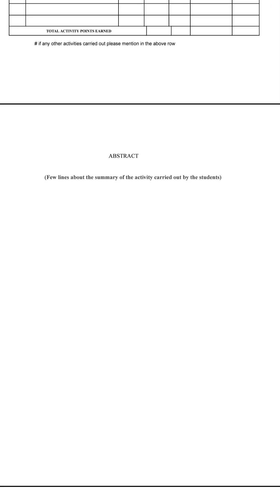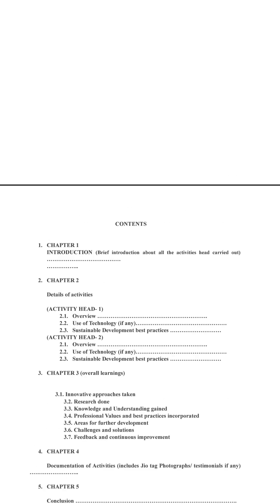You also have to provide an abstract — a summary of the activities you carried out. The content of the report is structured as follows: Chapter 1 gives a brief introduction about your activity and where you carried it out. Chapter 2 gives the details of the activities — activity head one, activity head two, and so on for all five activities — where you need to mention overview, use of technology, and sustainable development best practices.